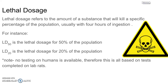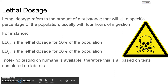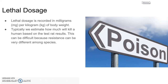What this means is that the higher the LD, the more lethal it is. Lethal dosage itself is recorded in milligrams per kilogram of body weight. Typically we will estimate how much will kill a human based on lab rats, but this can be very difficult because resistance to different poisons can vary — it can be very different among species, including between humans and rats.